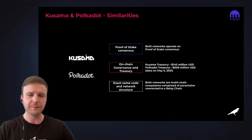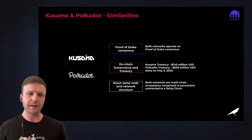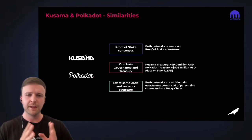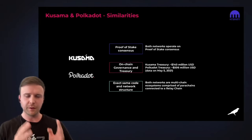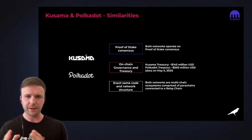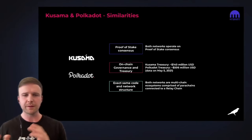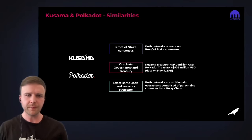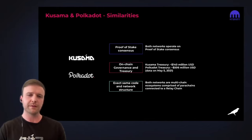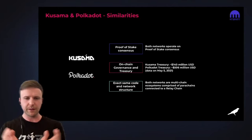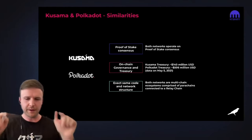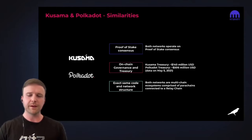The similarities between Polkadot and Kusama: both are proof-of-stake networks run by a set of validators — you can stake and earn returns on DOT and on KSM. Both have on-chain governance and treasury; the Polkadot treasury is around $500 million and Kusama's around $140 million. Both networks also share almost exactly the same code base and network structure — both have a relay chain, parachains, and bridges to other networks.